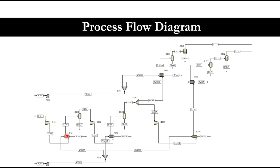Looking at the first stage: K-101 is the compressor, E-101 is the heat exchanger, and D-101 is the flash separator to remove any condensate produced from this process. That's how one stage is completed. Then again: compression, heat exchange, flash separation — and at the end, if you want to remove material like CO₂ from air, you can use absorbers.